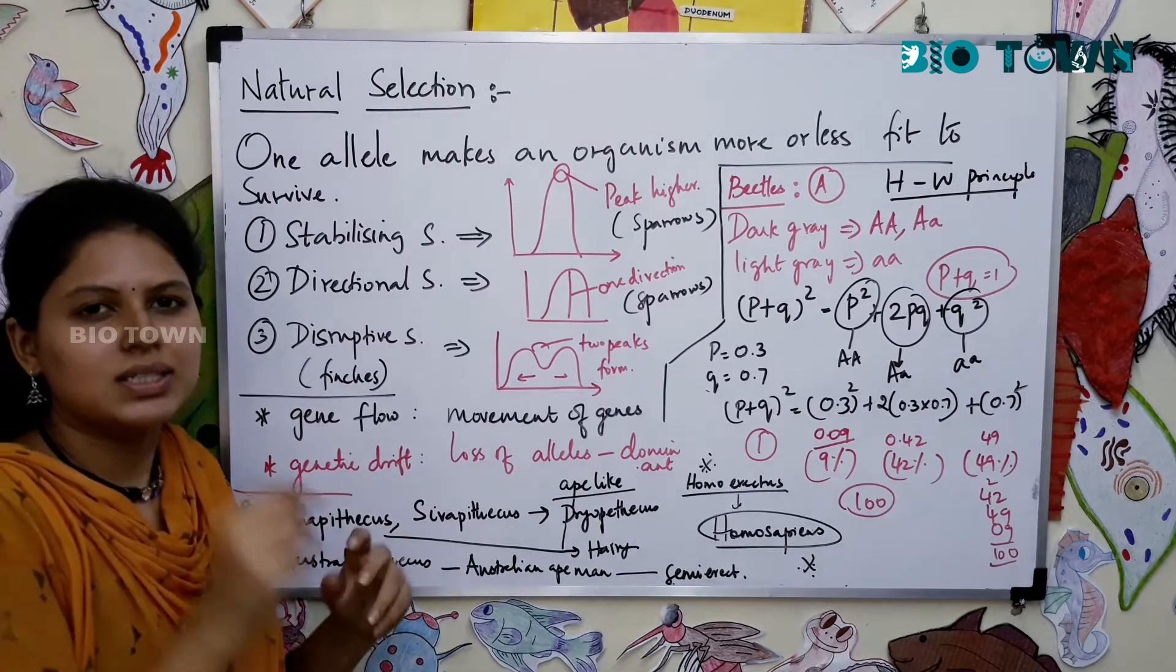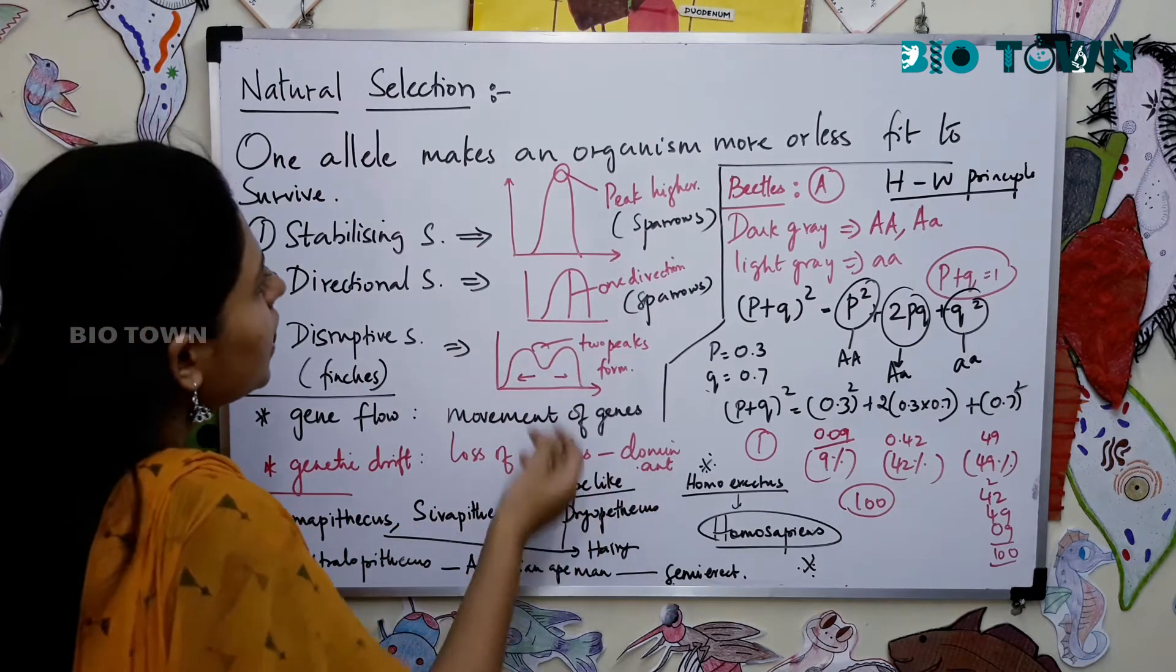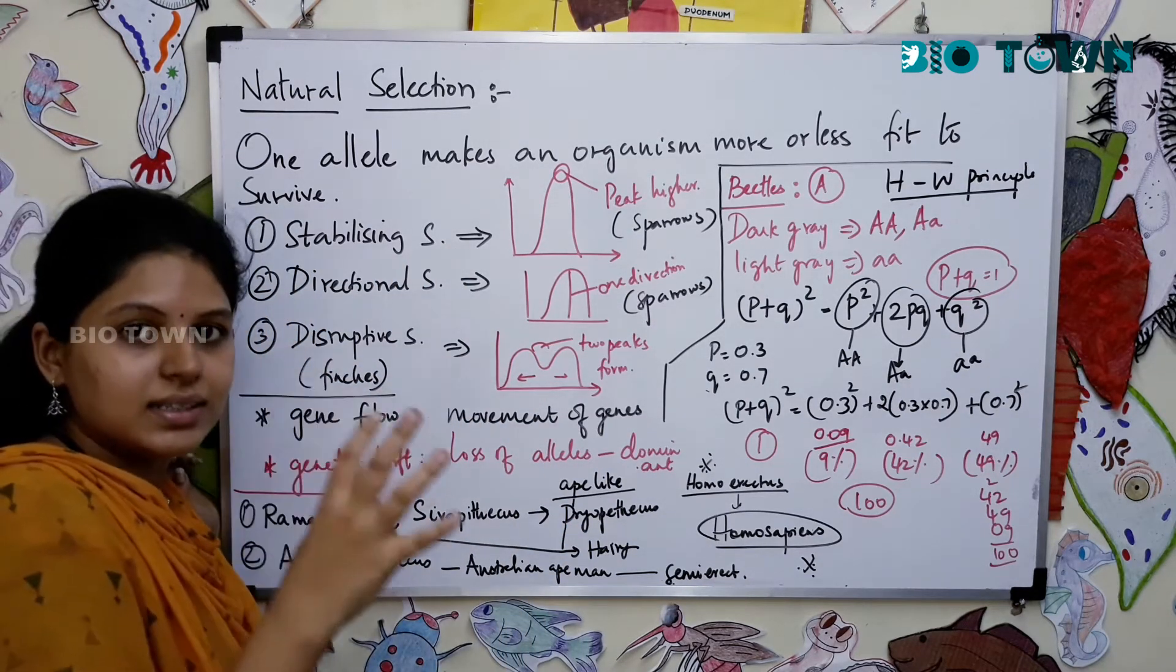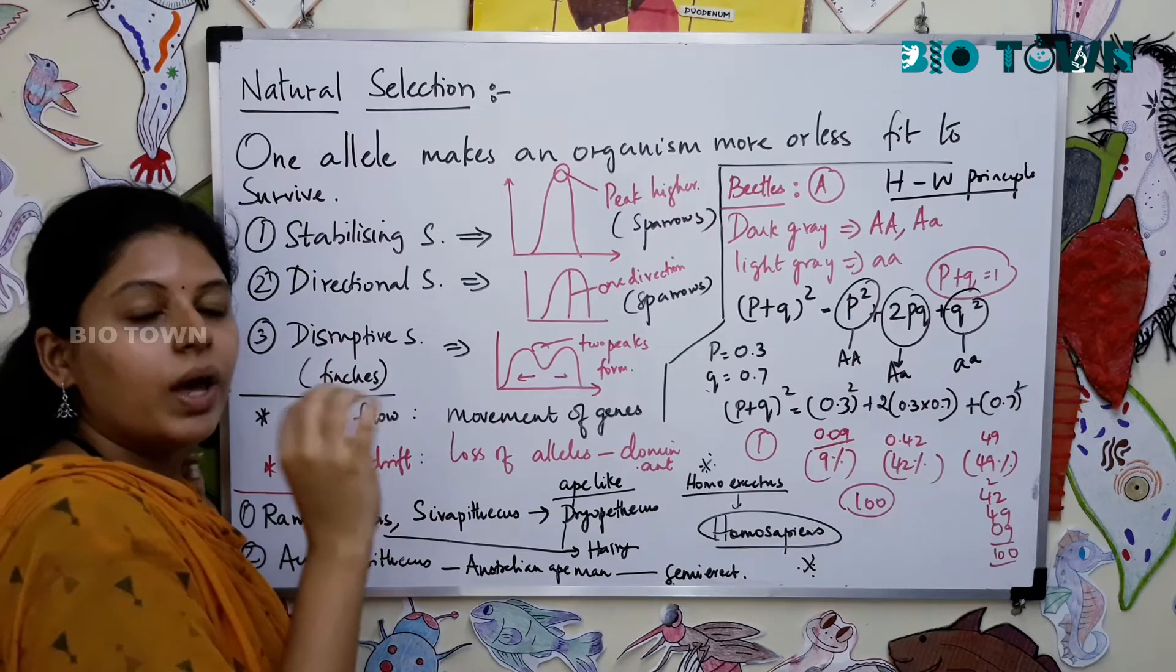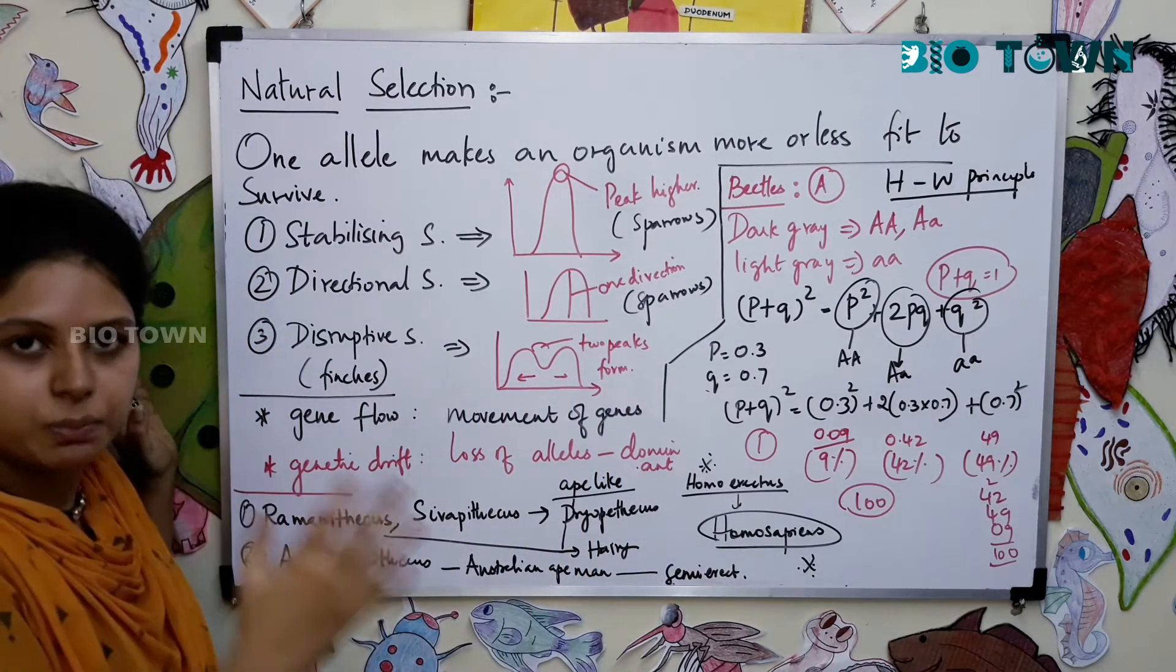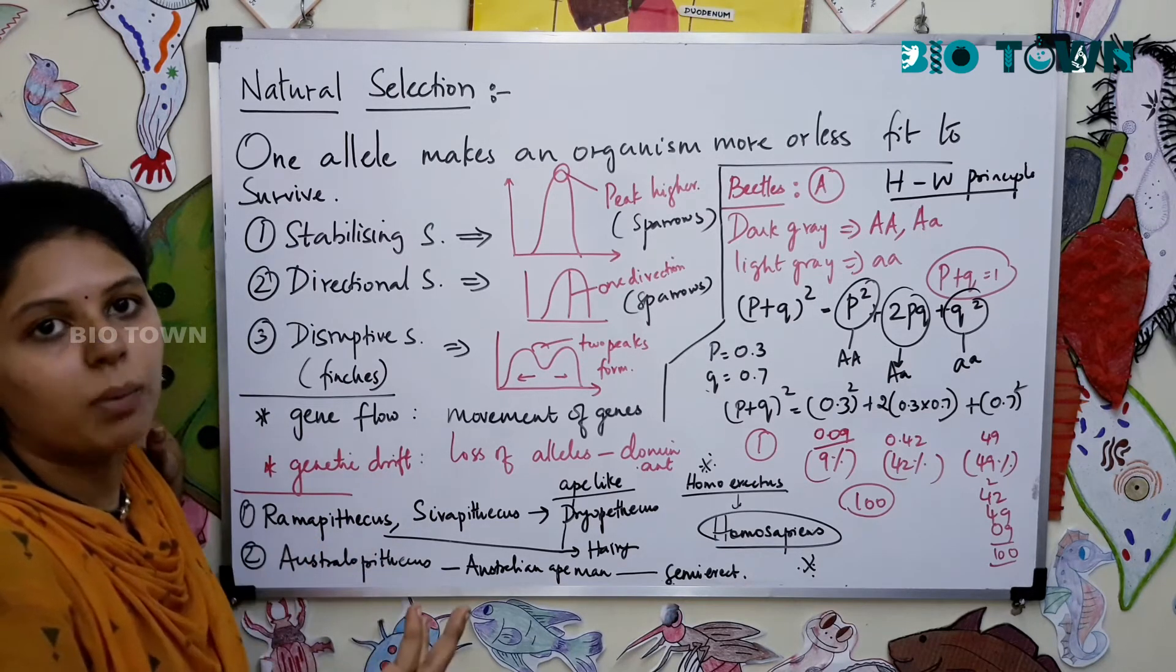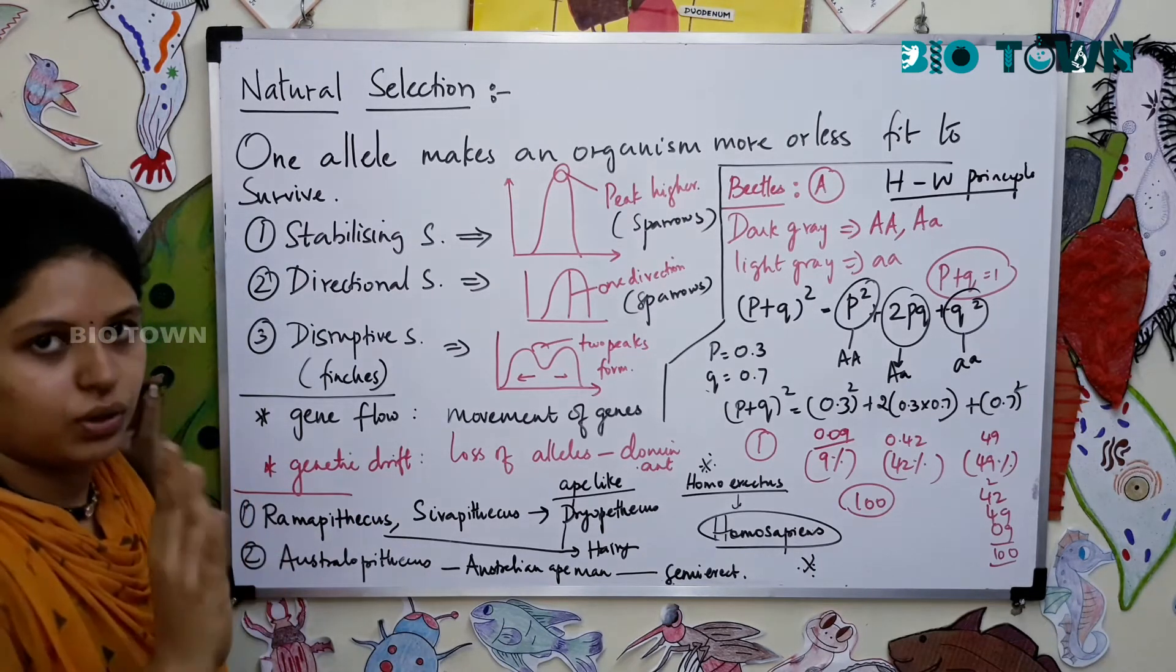First is stabilizing selection. I will be explaining with the help of the graph. In stabilizing selection there is a higher peak where the organism, the population reaches its height. For example, when you talk about sparrows, many years back there were sparrows. They had enough food, nutrition, and the geographical area was fantastic, and eventually they ended up improving their population. They have stabilized where the population is in a fine amount.